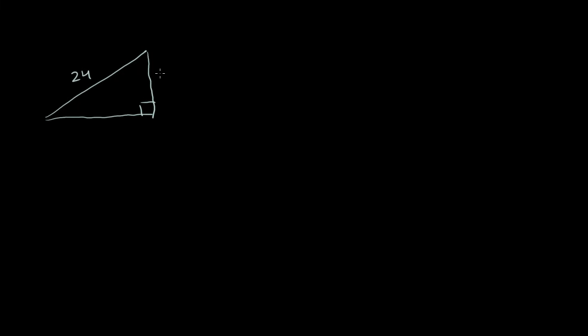Let's do one more. I have another triangle — there's my triangle, and that is the right angle. This side is 24, this side is 12, and we'll call this side B. Always identify the hypotenuse — the longest side, the side opposite the 90-degree angle. You might say you don't know which is longest since you don't know B yet. In that case, just note it's the side opposite the 90-degree angle. So 24 is the hypotenuse, and B squared plus 12 squared will equal 24 squared.